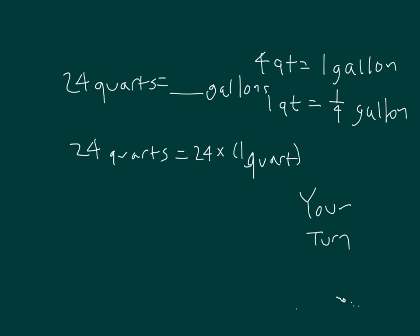24 quarts times 1 quart, which equals 24 times 1/4 of a gallon, which equals 6 gallons. Check over your work. One step in between would have been 24/4 gallons.